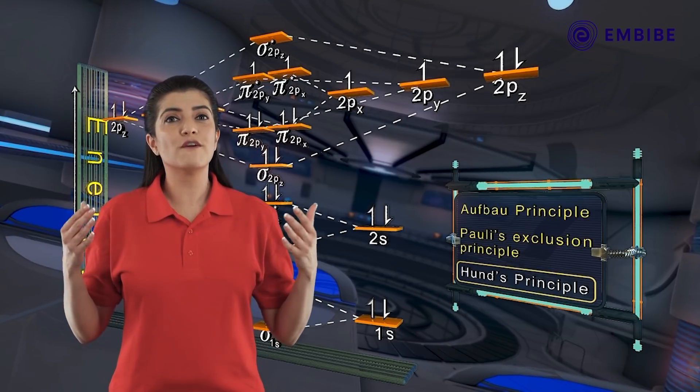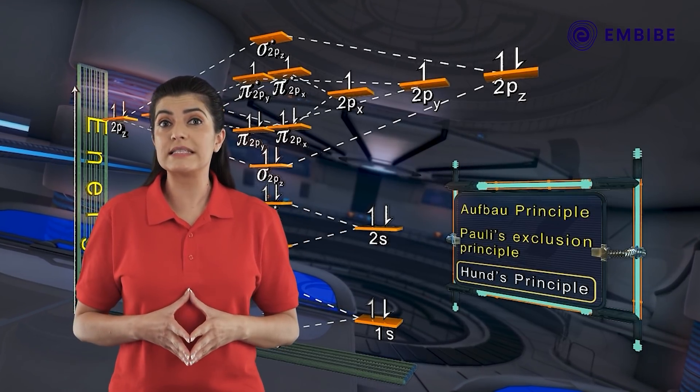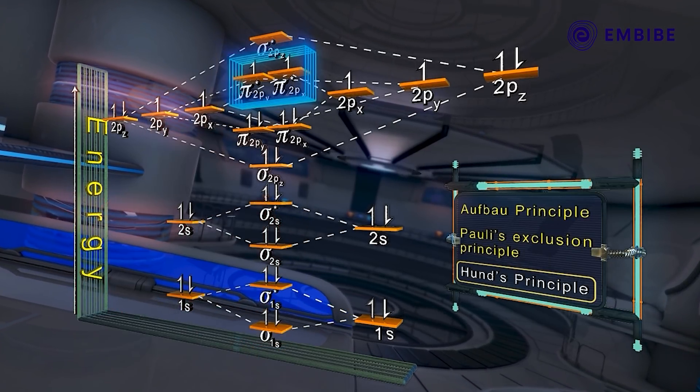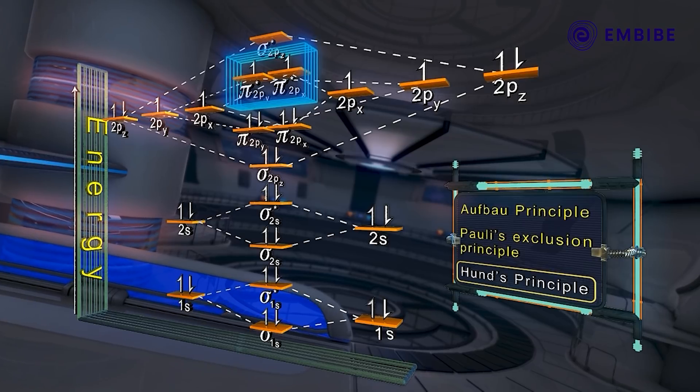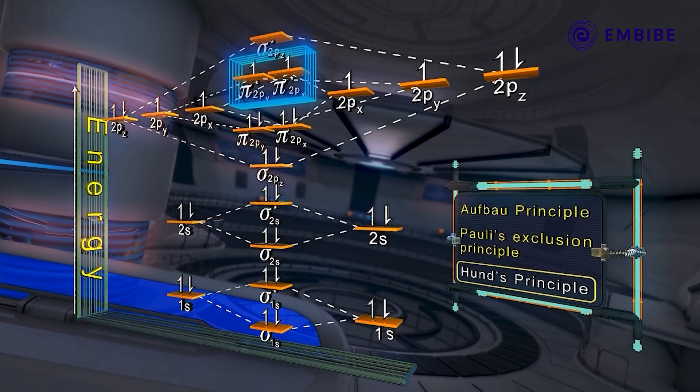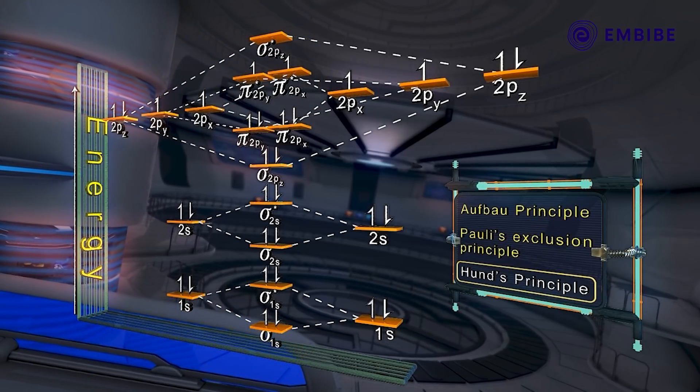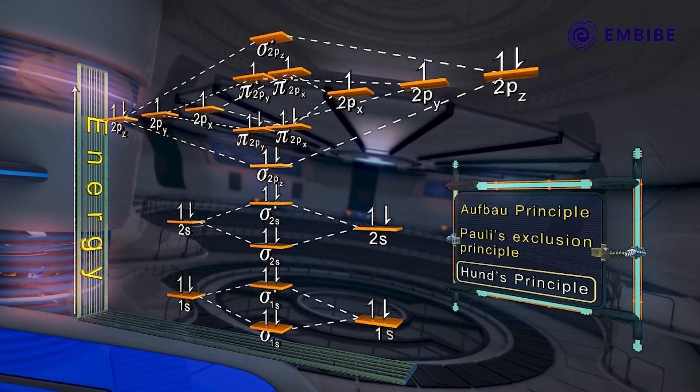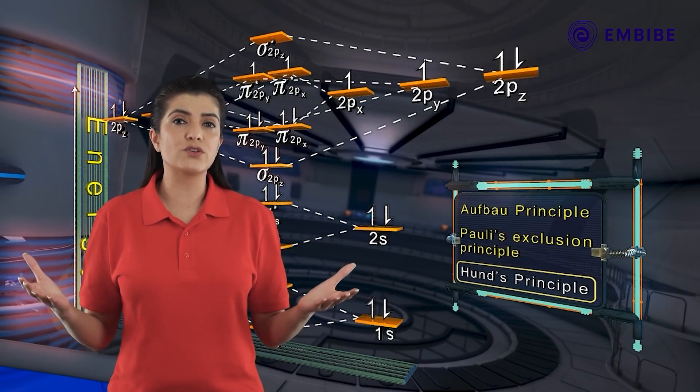Does this distribution of electrons cause paramagnetism in the oxygen molecule? Yes. The two electrons in the anti-bonding π*2py and π*2px orbitals are unpaired. Due to these two unpaired electrons, oxygen is strongly paramagnetic in nature.